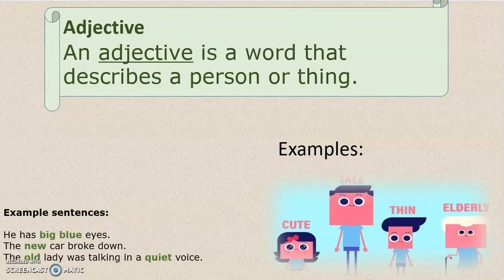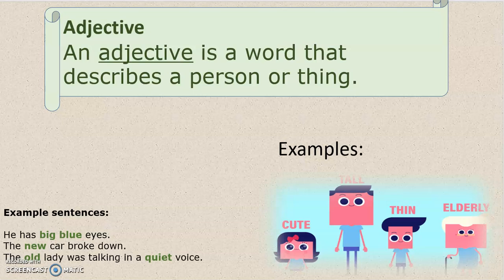Adjective. An adjective is a word that describes a person or a thing. For example, cute, tall, thin, elderly.